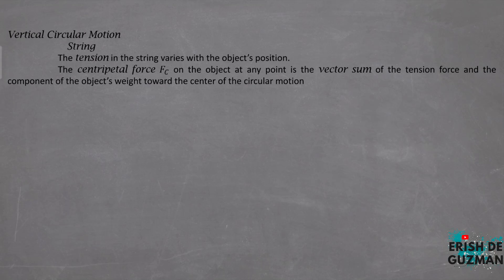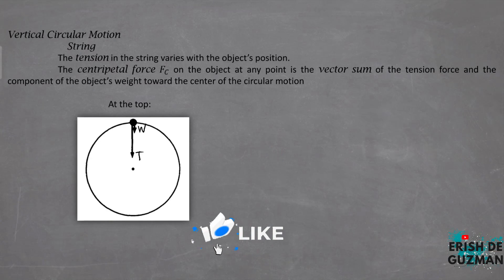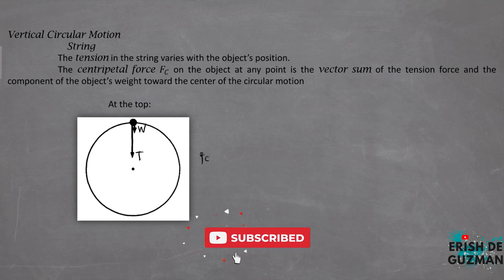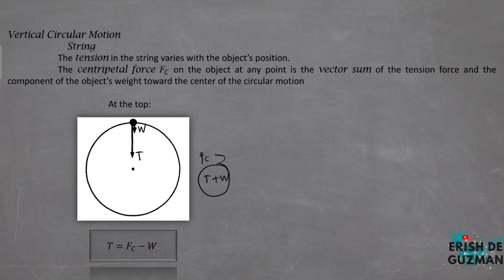We analyze the object attached to a string when the object is at the top of the circular motion. In the figure, we can see two arrows directed toward the center of the circle — the weight and the tension both act toward the center. So the centripetal force Fc, since both act toward the center, equals tension plus weight. Therefore, tension is equal to the centripetal force minus the weight.